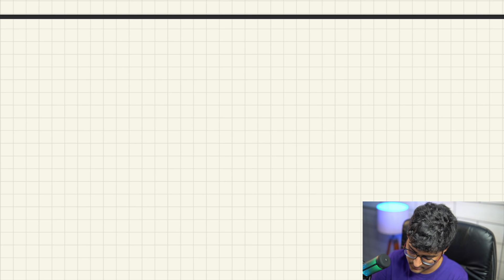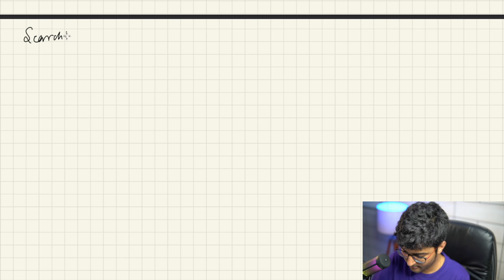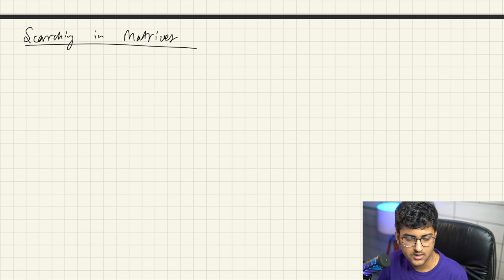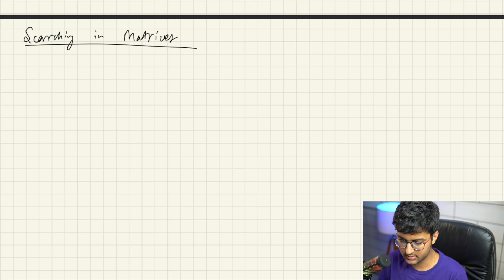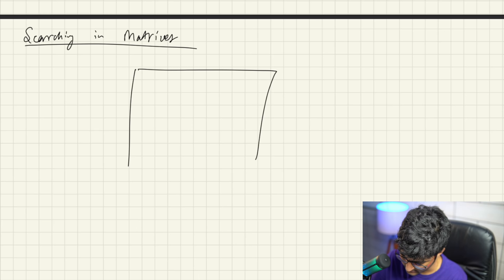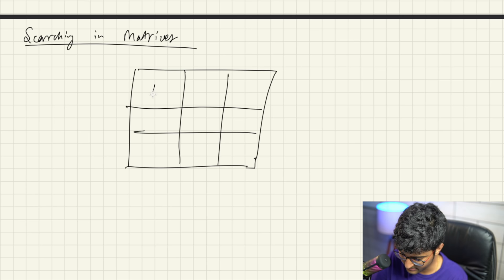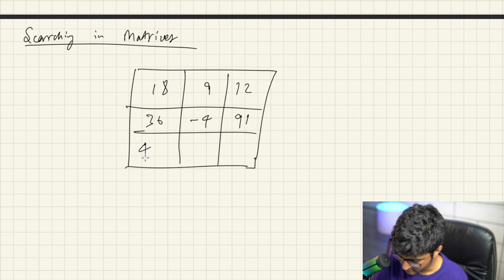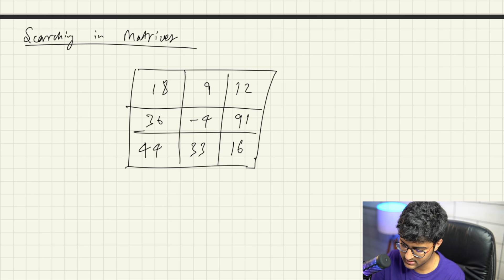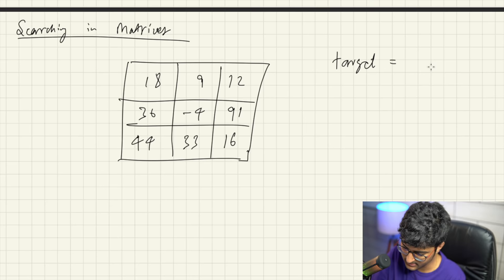If you don't know what matrices are, we've already covered it in the arrays lecture. So let's get started with searching in matrices — a 2D array. For example, given a 3x3 array with elements 18, 9, 12, 36, -4, 91, 44, 33, 16, and the target element to search is 91, you need to find whether 91 exists in this array.